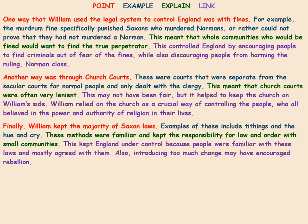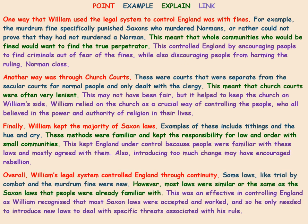Finally, William kept the majority of Saxon laws — examples include tithings and the hue and cry. These methods were familiar and kept responsibility for law and order with small communities, keeping England under control because people mostly agreed with them. Introducing too much change may have encouraged rebellion. Overall, William's legal system controlled England through continuity — some laws like trial by combat and the murdering fine were new, but most laws were similar or identical to Saxon laws. This was effective because William recognised that most Saxon laws were accepted and worked, so he only needed new laws to deal with specific threats associated with his rule.